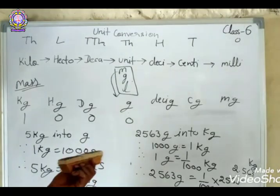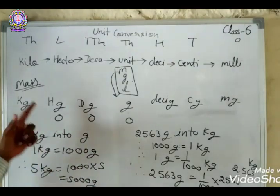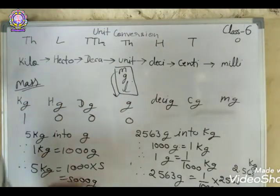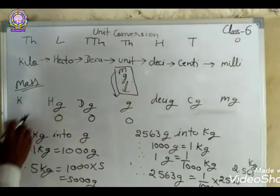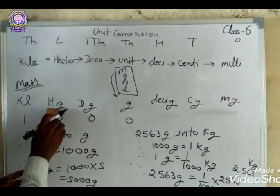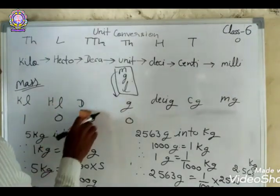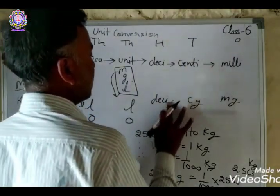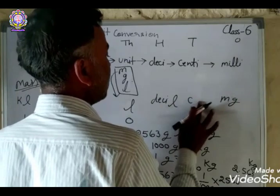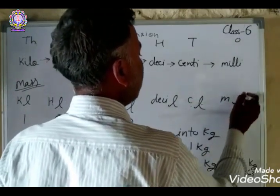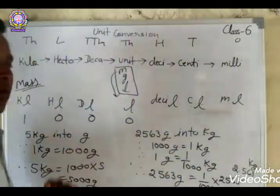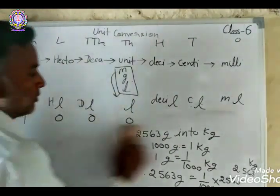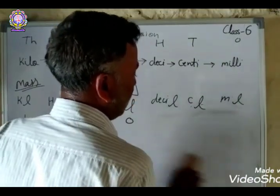The same method is applied to the unit of capacity. The units are: kiloliter, hectoliter, decaliter, liter, deciliter, centiliter, and milliliter. Now I am giving you the exercise — solve these questions if you understand the method.